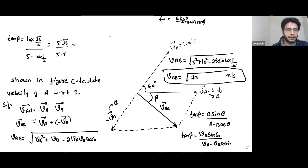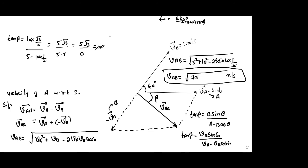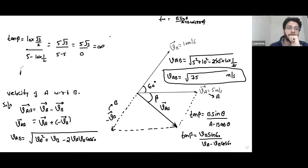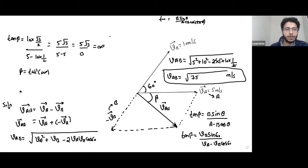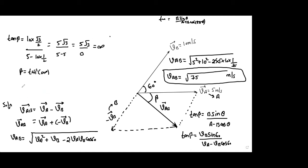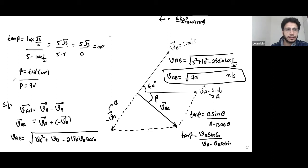Evaluating: 5 minus 5 equals 0 in the denominator, and the numerator is 5√3. So tan beta equals 5√3 divided by 0, which is infinite. When tan beta is infinite, beta equals 90 degrees. So for relative velocity problems in 2D, we use VAB equals VA minus VB and the rest is vector subtraction.